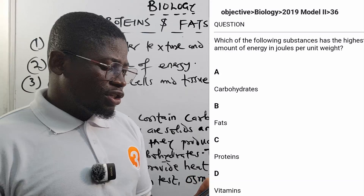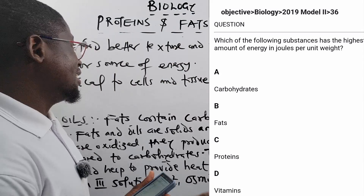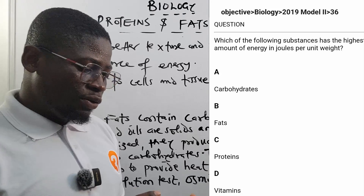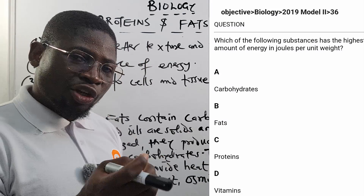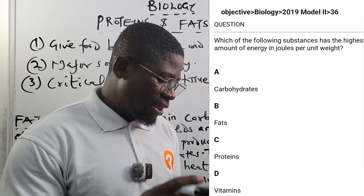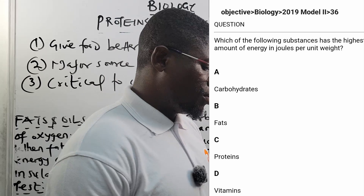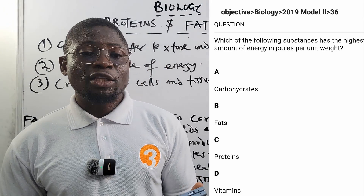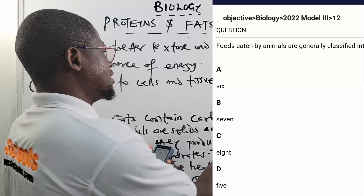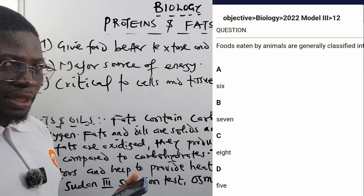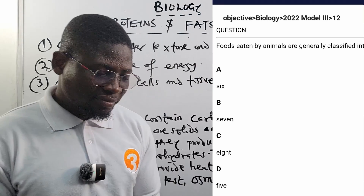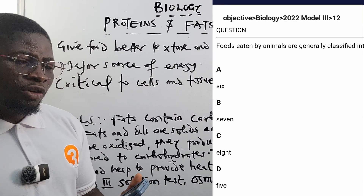2019 number 36: which of the following substances has the highest amount of energy in joules per unit weight? Since fats have greater food energy per mass than carbohydrates, water, and protein, the correct answer is option B — fats. 2022 number 12: foods eaten by animals are generally classified into how many classes? We talked about seven classes: carbohydrates, proteins, fats, vitamins, mineral salts, water, and roughage. Correct answer is option B — seven.